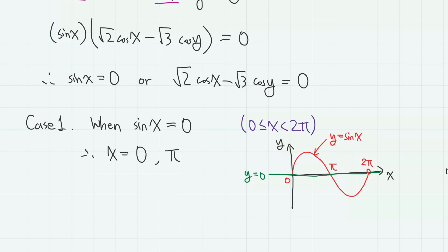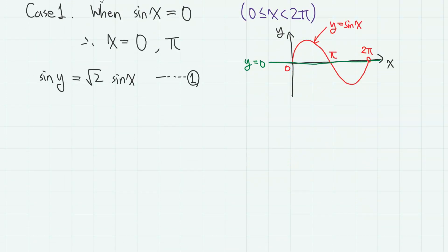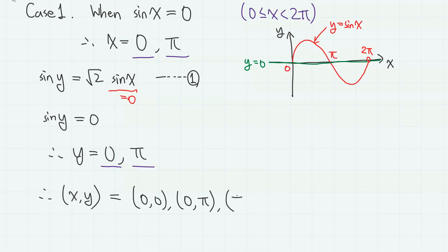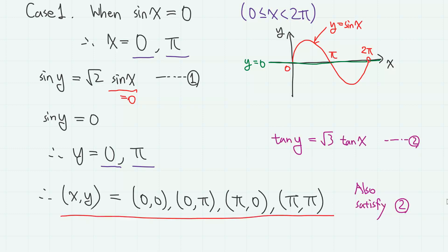I think the most efficient way to find these values is by using graphs. Now let us find y using the first equation. Since sine x is 0, we have sine y equals 0, which gives y equals 0 and π. So x can have values of 0 and π, and for each value of x, y can also have values of 0 and π. Therefore, we obtain roots (0, 0), (0, π), (π, 0), and (π, π). You can easily check that all of these roots satisfy both equations 1 and 2.